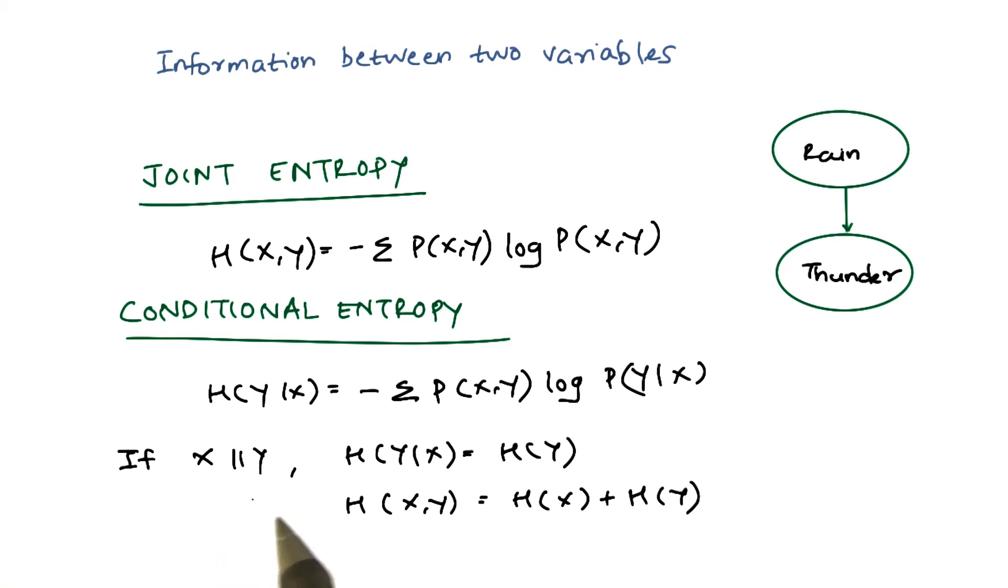If two variables are independent of each other, the y variable doesn't get any information from x at all. The joint entropy between x and y, if x and y are independent, is the sum of information of both x and y. That is why the entropies have been added here.